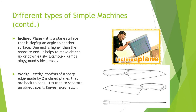You must have seen inclined planes in railway stations and airports, where heavy boxes or luggage can be moved up or down a slope easily. So the inclined plane is a flat surface that is sloping at an angle to another surface.